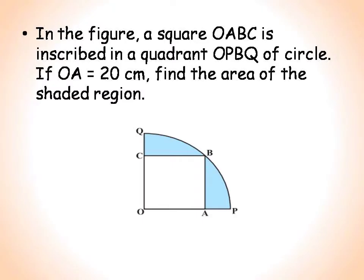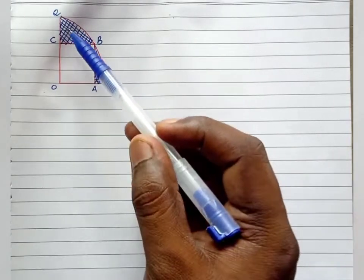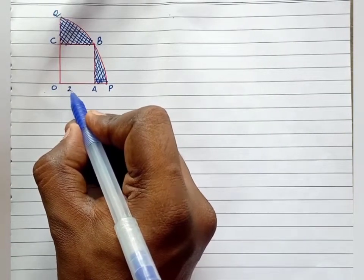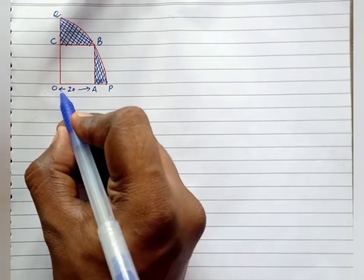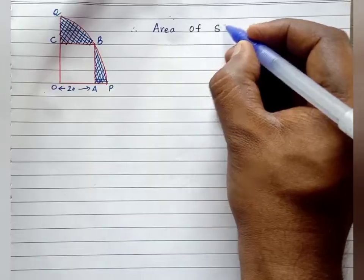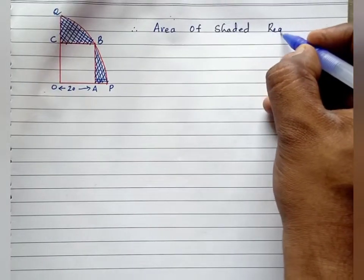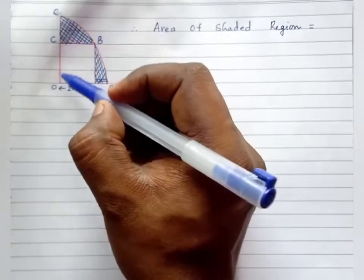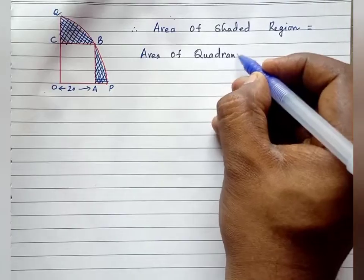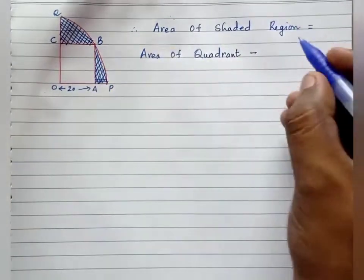A square OABC is inscribed in a quadrant OPBQ of a circle. If OA equals 20 centimeter, find the area of the shaded region. The first step is analysis of the figure. To find the area of the shaded region, I should find: area of quadrant OQBP minus area of square OABC equals area of shaded region.